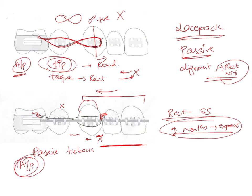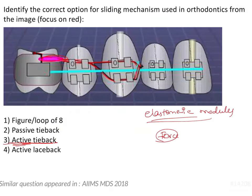These are the uses of the different types of lace backs and tie backs seen during orthodontic treatment. Since we can see the elastic module and the ligature wire in this image, we know this is an active tie back.